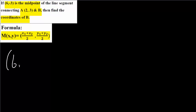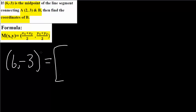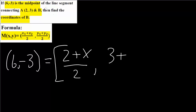Our midpoint is given as 6, negative 3, because we're given that the midpoint is (6, negative 3) connecting between A and B, and we want to find B. So this is equal to: x-coordinate — x is 2 for one of them, plus our second x-coordinate for b, we can just write x — divided by 2, comma, y1 we said was 3, so 3 plus y-term, we don't know y for b, so simply y, divided by 2.